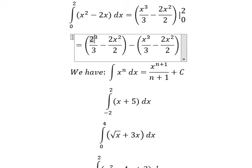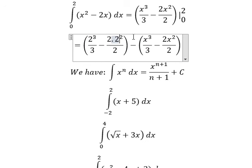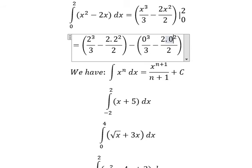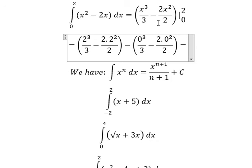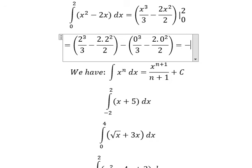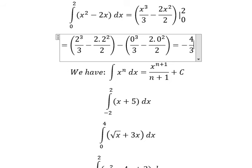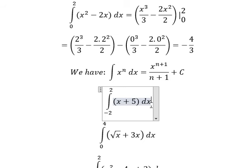I will put number two in here and number zero in here. And we got the final answer: negative four over three. This is the final answer. Now let's go to the next one.